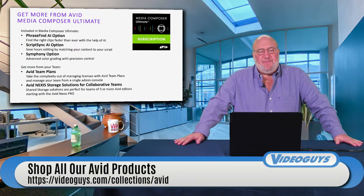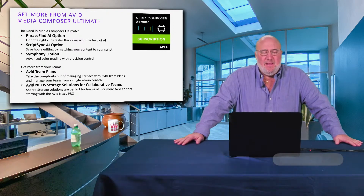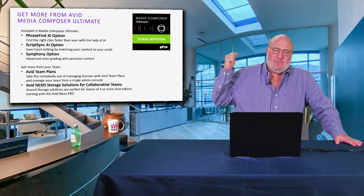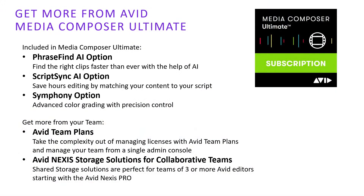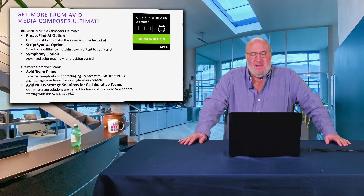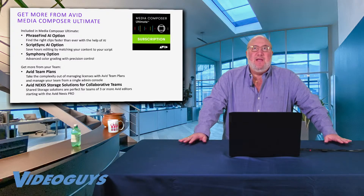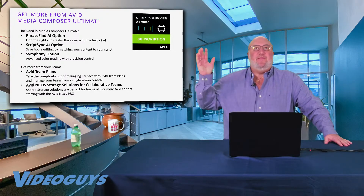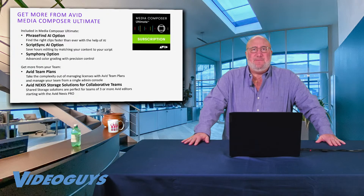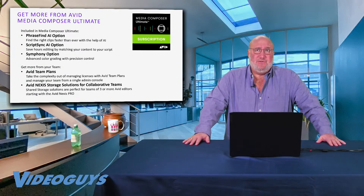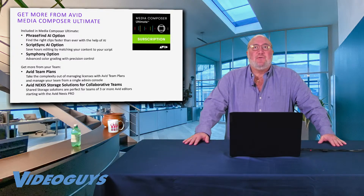The key things you get with Media Composer Ultimate include PhraseFind, which lets you find specific clips by searching for words inside your video. ScriptSync actually syncs your video to a script if you're working on a scripted TV show or movie. Symphony gives you advanced color grading with precise control. And you can work as a team in a Nexus shared environment with 2, 3, 5, 10, 20, 50 people all working together, using Avid Nexus storage solutions.